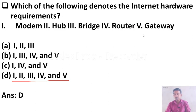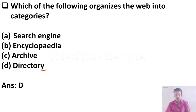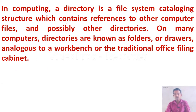Which of the following organizes the web into categories? Option A: Search Engine, Option B: Encyclopedia, Option C: Archive, Option D: Directory. The right answer is Option D, Directory. In computing, a directory is a file system cataloging structure which contains references to other computer files and possibly other directories. On many computers, directories are known as folders or drawers.